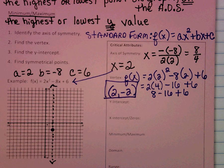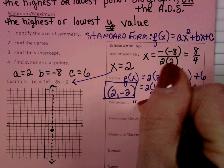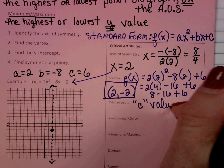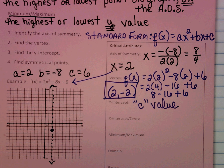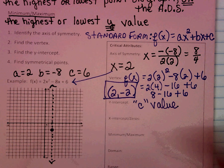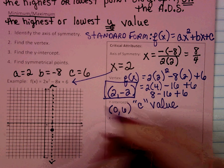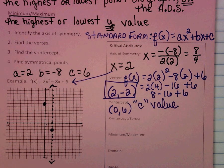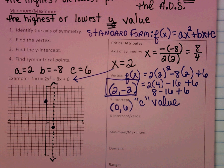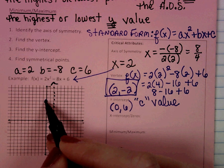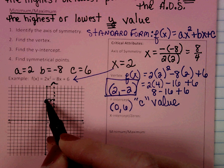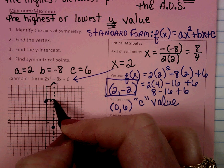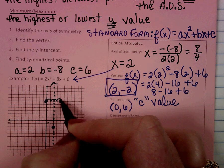The next thing is our y-intercept. The really cool thing is all we have to do is look at the equation — the y-intercept is the c value. My c value was 6, so my y-intercept is (0, 6). Now we want to find some symmetrical points. Since the y-intercept is 2 units away from the axis of symmetry, we go 2 units the other way to get a symmetrical point, and at that point we could sketch our graph.